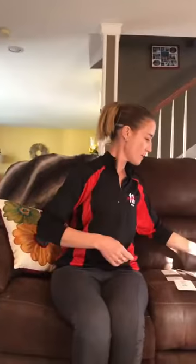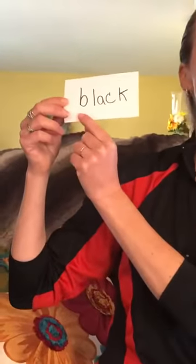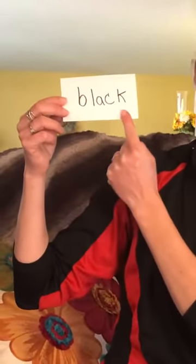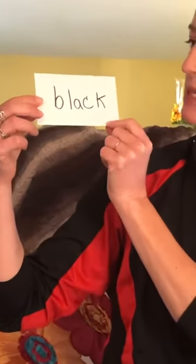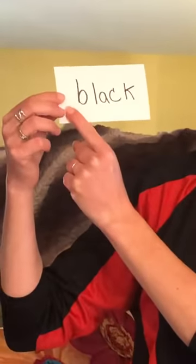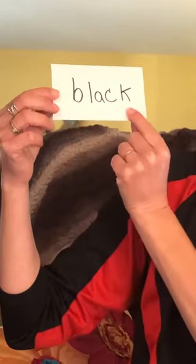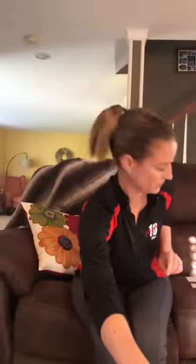Now let's see if you can read some of these words. What does this say? Black. See if you can say a full sentence. This is black. The tire on a car is black. What does this say? Blue. The sky is blue.